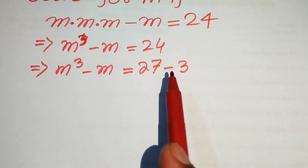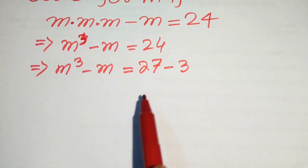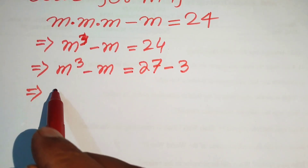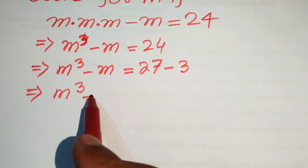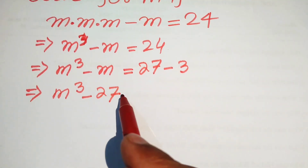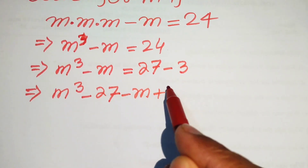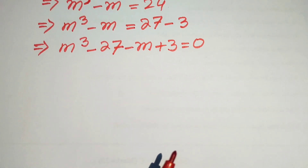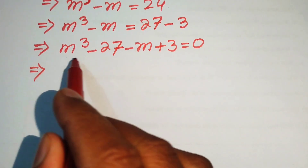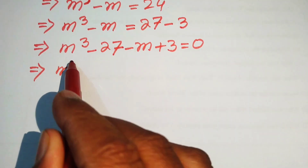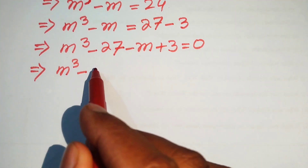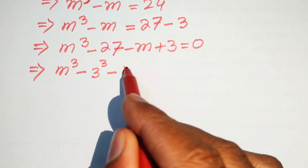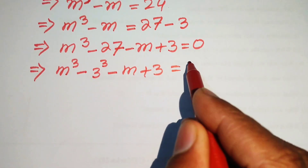You know that 27 minus 3 equals to 24. Now we move these two terms to the left hand side, giving m cubed minus 27 minus m plus 3 equals to 0. Further, we write 27 in prime factor form so that 27 equals to 3 cubed, giving m cubed minus 3 cubed minus m plus 3 equals to 0.